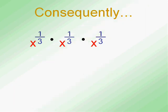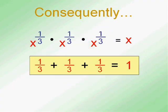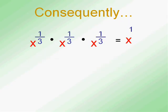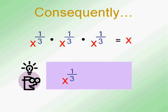Let's take this a step further and talk about x to the one-third. If x to the half is the square root, what is a third plus a third plus a third? A third plus a third plus a third equals one as well, which we usually don't write. So x to the one-third is another way of writing the cube root of x.